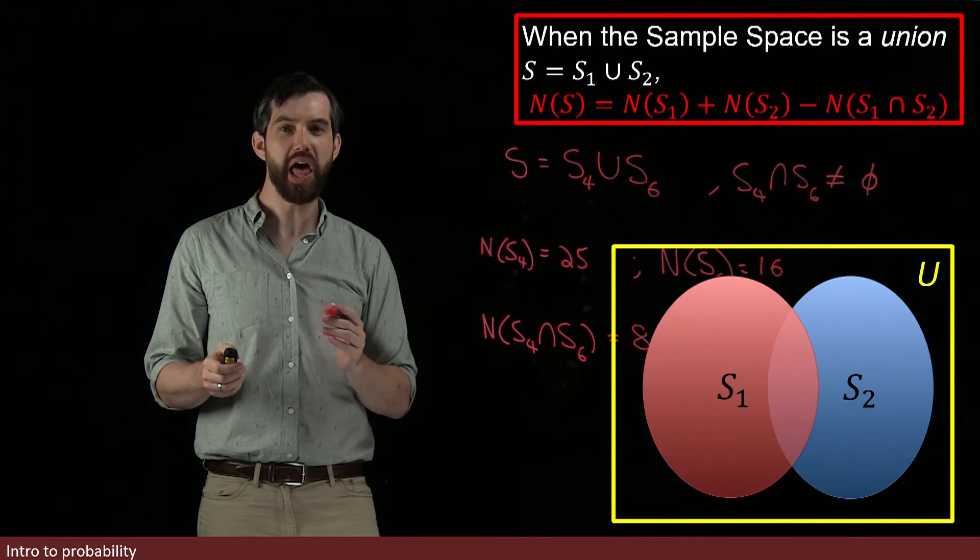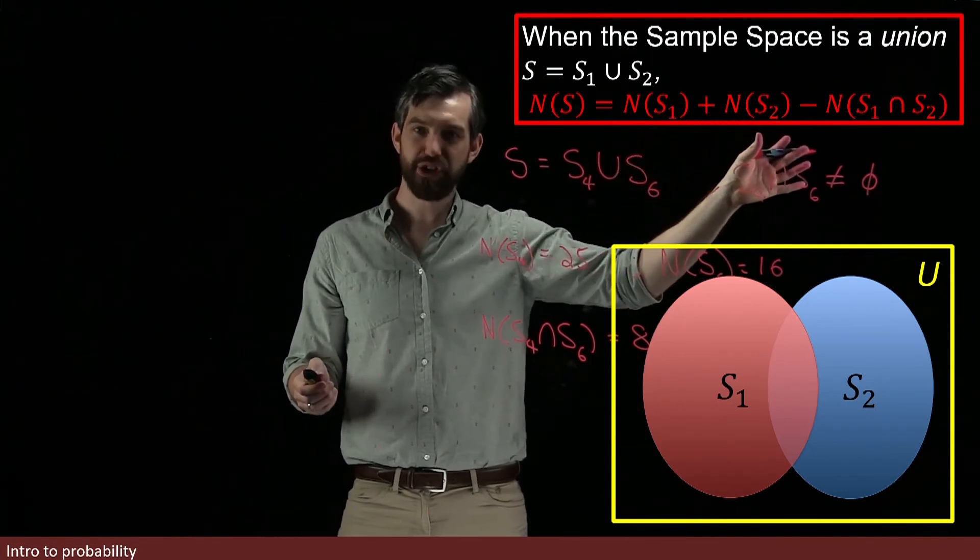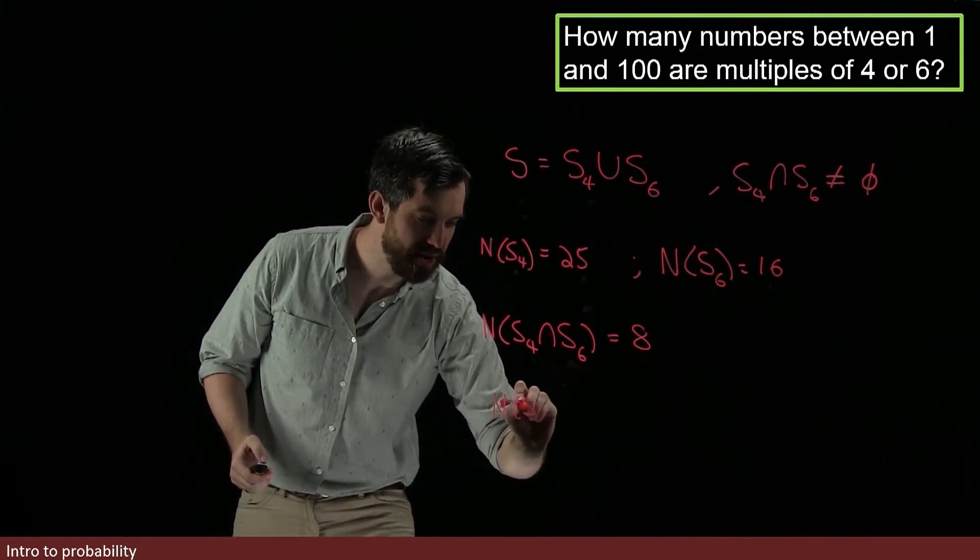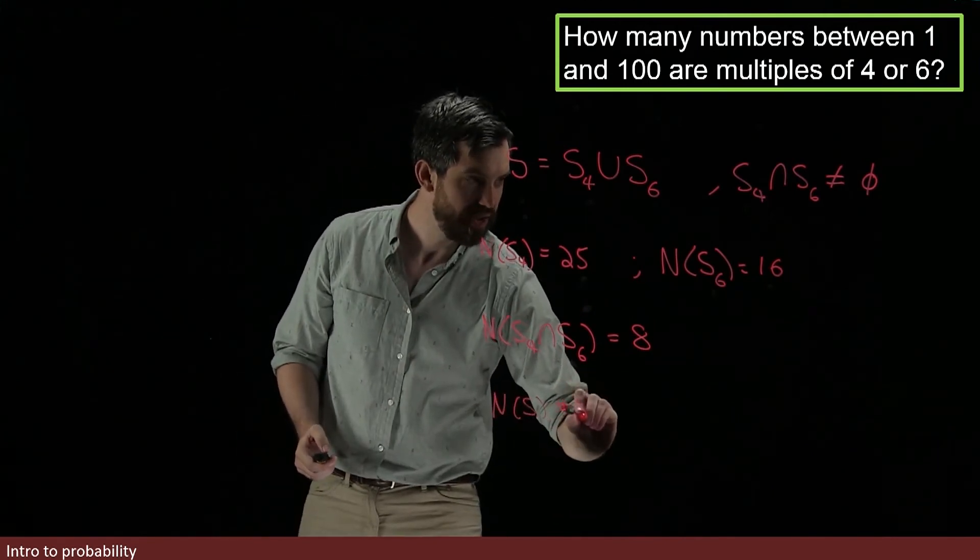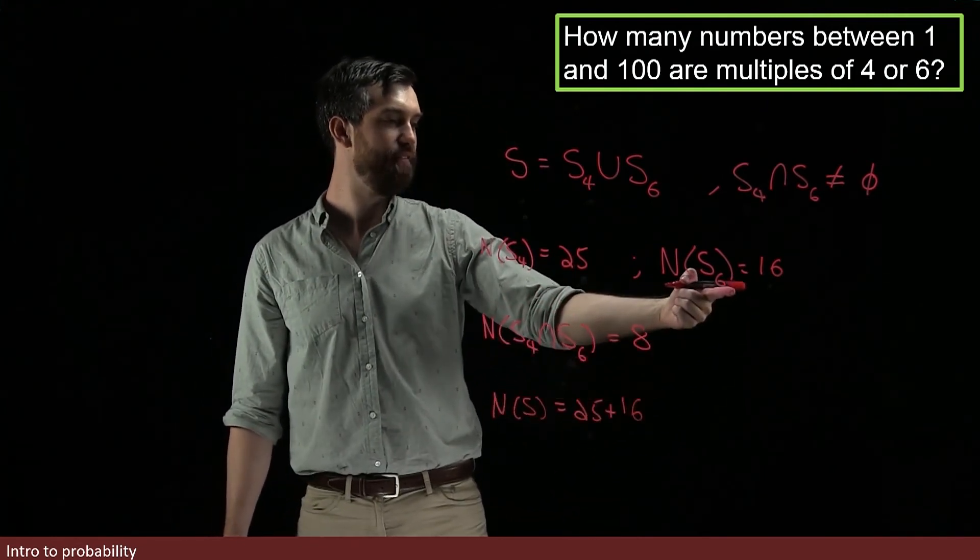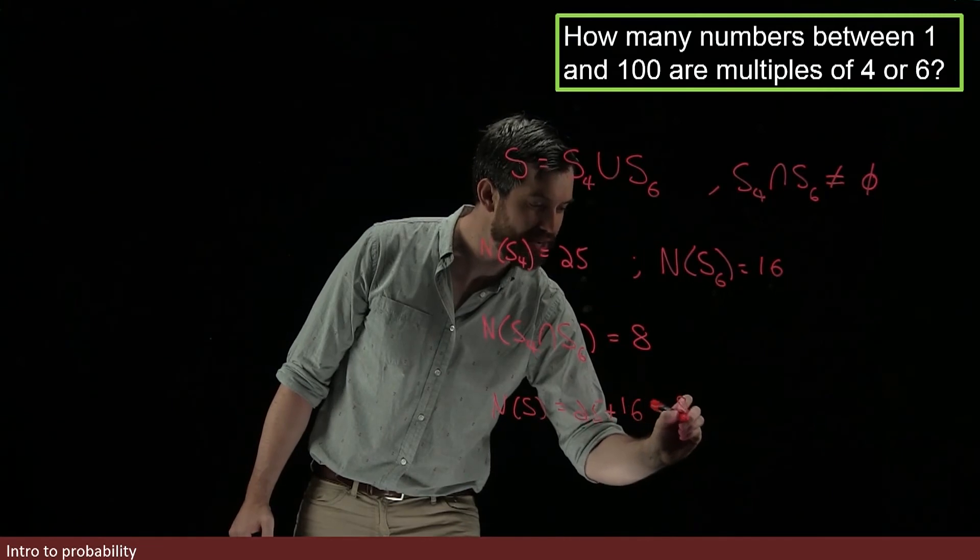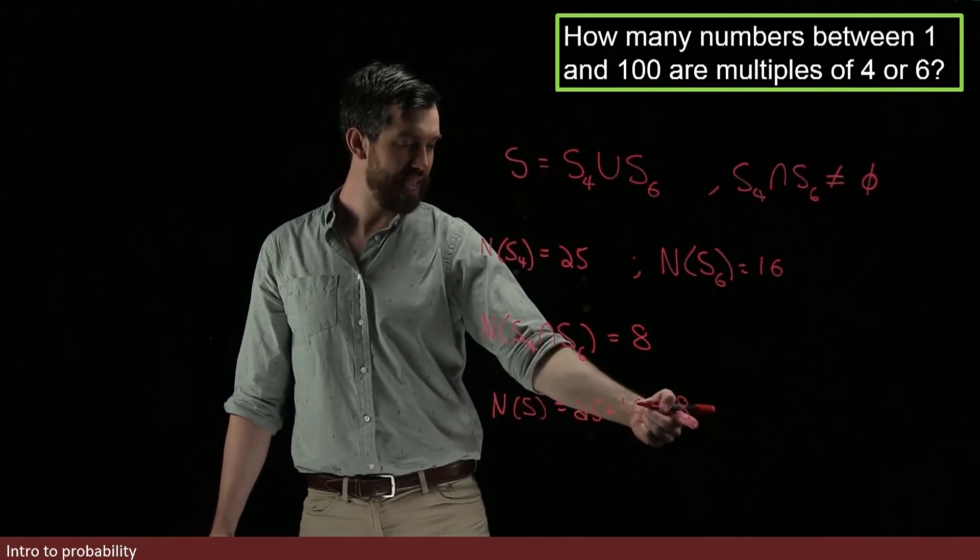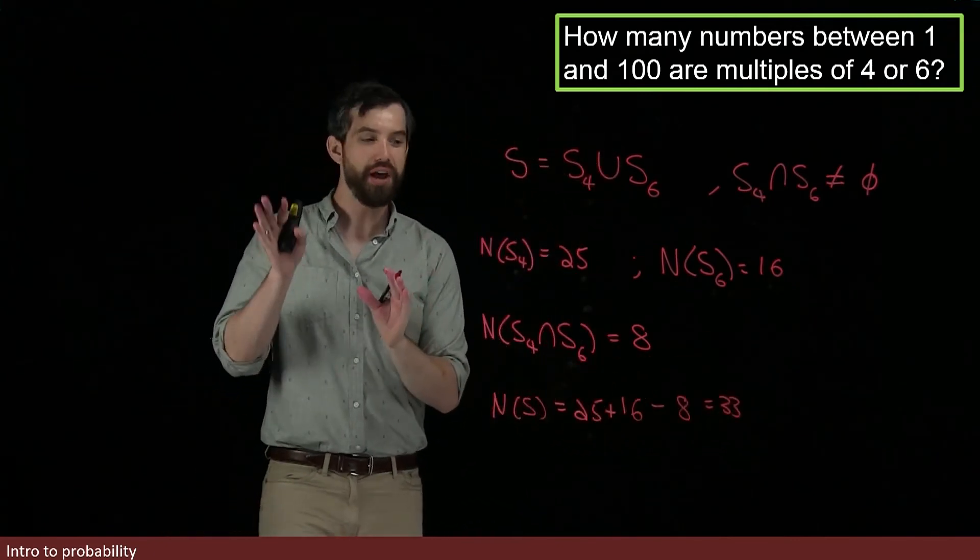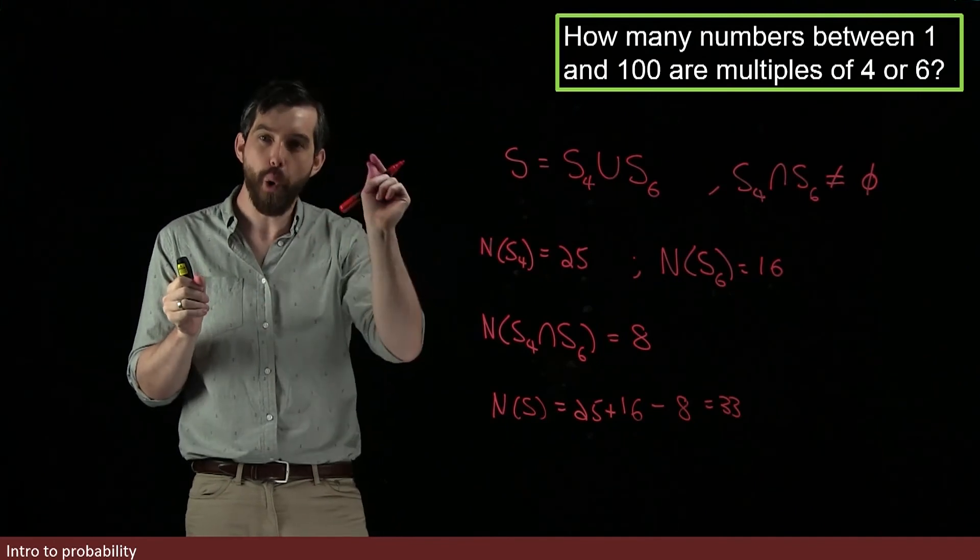If we go back to the previous slide where we had our formula, our formula was that the total number was I added the S1 and the S2 and I subtract off the number in my intersection. So, if I want to come and figure out what is the number in S in my total sample space, then it's going to be the 25 plus the 16. This is the N of the S4 plus the N of the 16. And then, finally, I am going to subtract off the number in the intersection. I am going to subtract off my 8. And if 16 minus 8 is going to be 8, then 8 and 25 is going to be 33.